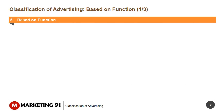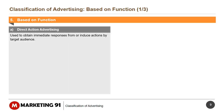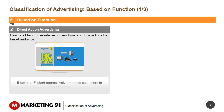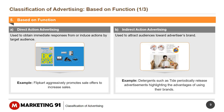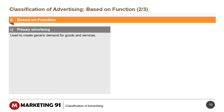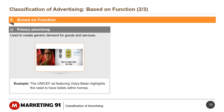The next classification is based on function, which is divided into six sub-classifications. Direct action advertising is used to obtain immediate responses from or induce actions by the target audience. For example, Flipkart aggressively promotes sales offers to increase sales. Indirect action advertising is used to attract audiences toward the advertiser's brand. For example, detergents such as Tide periodically release advertisements highlighting the advantages of using their brands. Primary advertising is used to create generic demand for goods and services. For example, the UNICEF ad featuring Vidya Balan highlights the need to have toilets within homes.